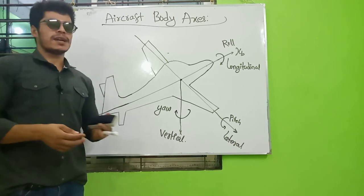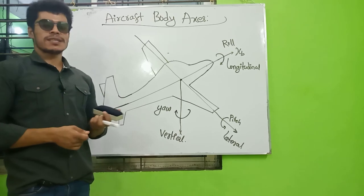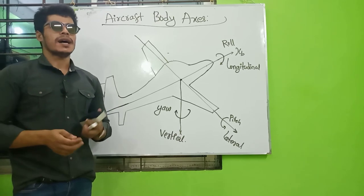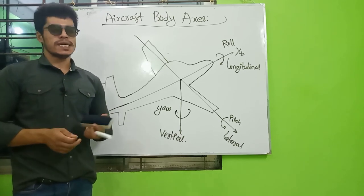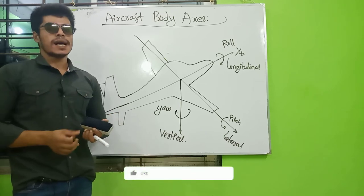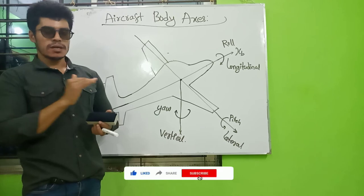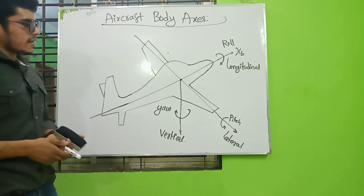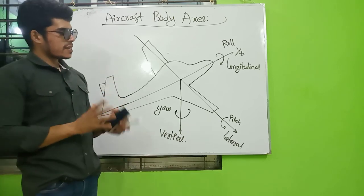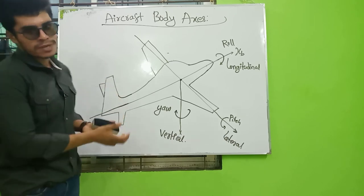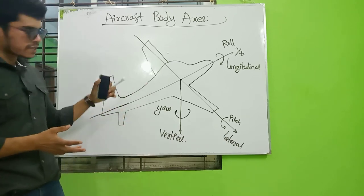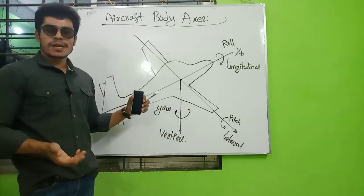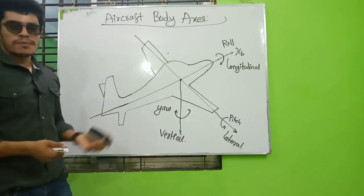The three axes used for aircraft are different from general axes. We take aircraft as an example. Types of aircraft include a helicopter, an airship, an airplane, a rotorcraft, etc.